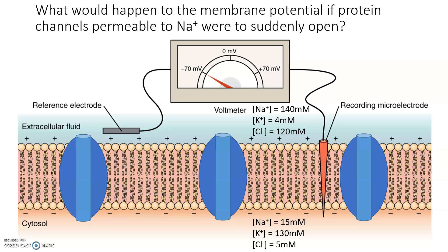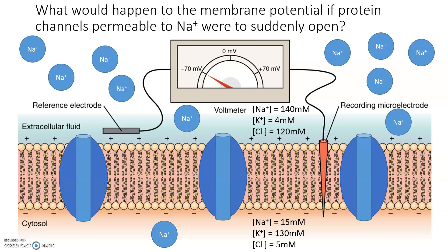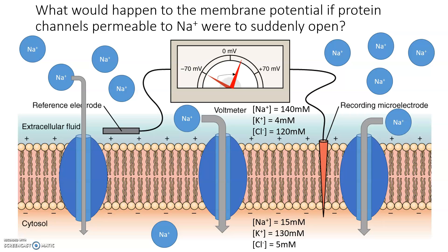If you said the membrane potential will increase, you got it. When the sodium ion channels open, the sodium ions move down their concentration gradient and rush into the cell. This makes the inner membrane more positive, therefore increasing the membrane potential.